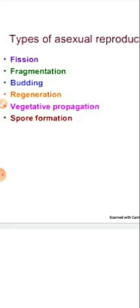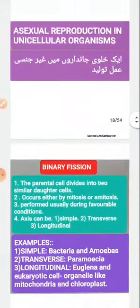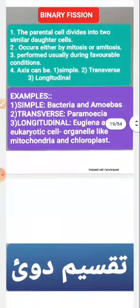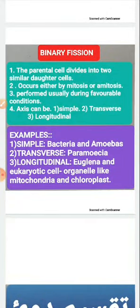Let us start with asexual reproduction in unicellular and multicellular organisms. There are six types of asexual reproduction: fission, fragmentation, budding, regeneration, vegetative propagation, and spore formation.